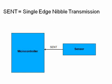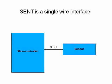SENT stands for Single Edge Nibble Transmission. It is basically a single wire interface. Even though we mention single wire, there are actually three wires in the sensor: one is power, one is ground, and the other is the data pin, which connects to our controller to read the data.